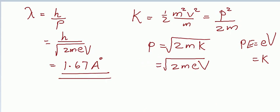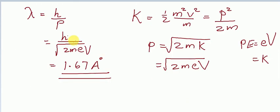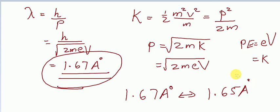By the Davisson-Germer experiment, the wavelength lambda is calculated as 1.65 angstrom. At the same time, using the de Broglie relation, we calculated the wavelength as 1.67 angstrom. The experimental result of 1.65 angstrom is in close agreement with the calculated value of 1.67 angstrom using the de Broglie relation. This became a solid proof for the de Broglie concept of matter waves. Thus, the Davisson-Germer experiment directly verifies the de Broglie hypothesis of the wave nature of particles.